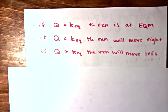So, I think it's easy to understand that if Q is equal to K, then the reaction is at equilibrium.